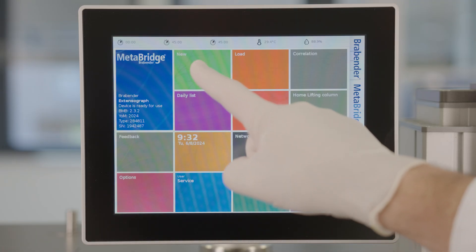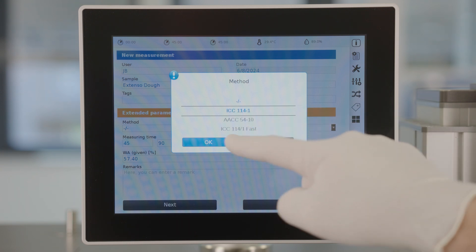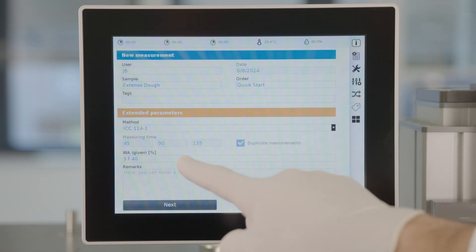Set your test parameters by tapping new and method, and filling the parameters. Tap next or select from daily list.